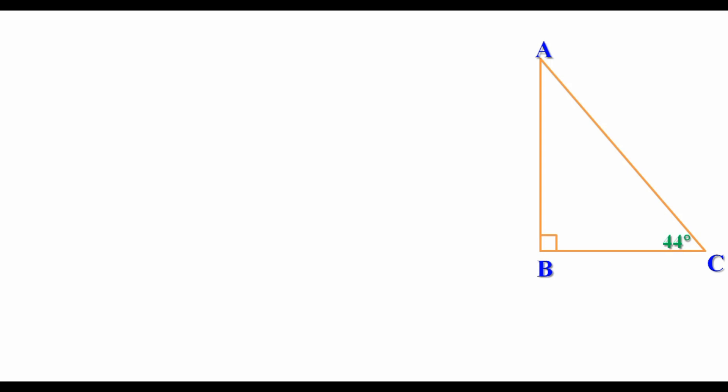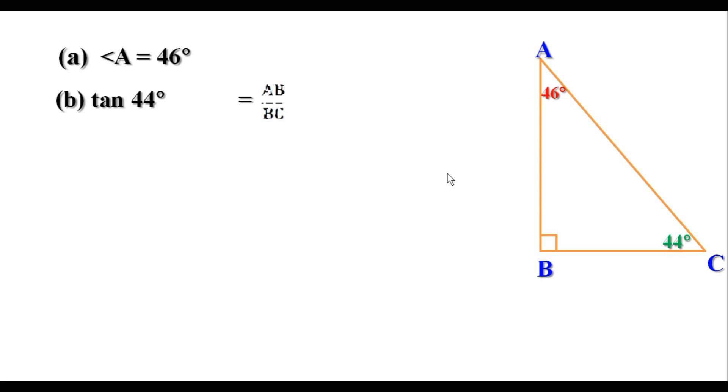We have to find angle A. We know the sum of the three angles of a triangle is 180 degree. Here angle B is 90 degree, therefore angle A plus angle C equal to 90 degree. So angle A equal to 90 minus 44, that is equal to 46 degree. Now we have to find tan44. tan44 means opposite side of angle C by adjacent side. Here opposite side of angle C is AB and adjacent side is BC. Therefore tan44 equal to AB by BC. Let us find tan46 also, that is BC by AB.